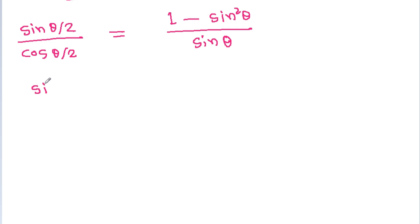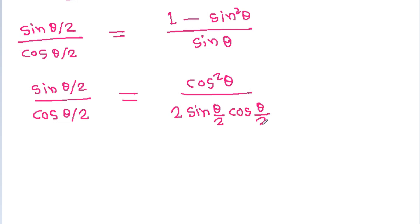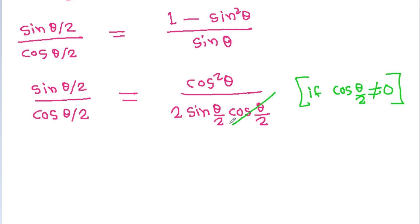So sin(θ/2) by cos(θ/2) is equal to (1 minus sin²θ), which equals cos²θ, divided by sinθ. And sinθ is equal to 2·sin(θ/2)·cos(θ/2). If cos(θ/2) is not equal to 0, then we can cancel cos(θ/2) from both sides.